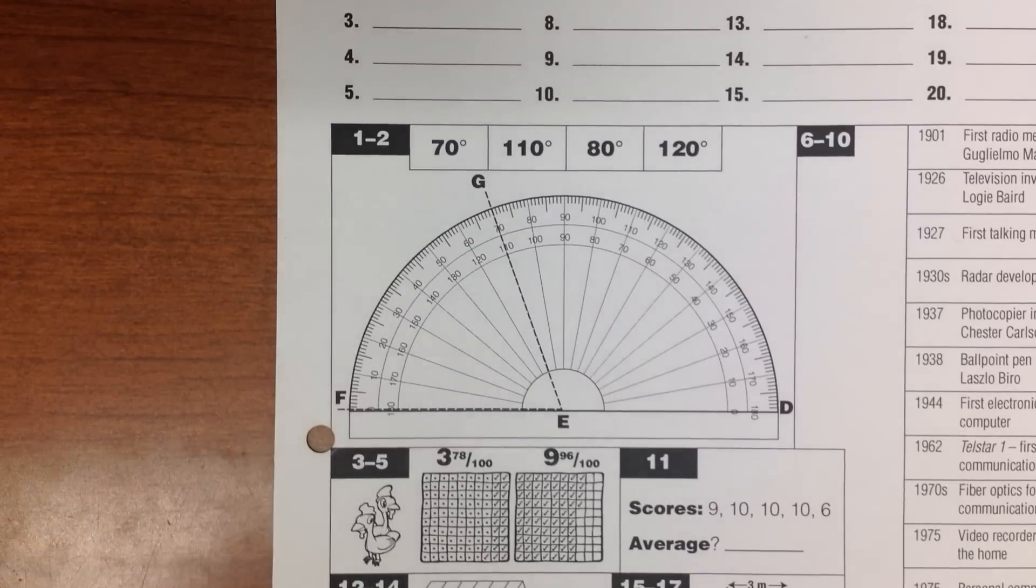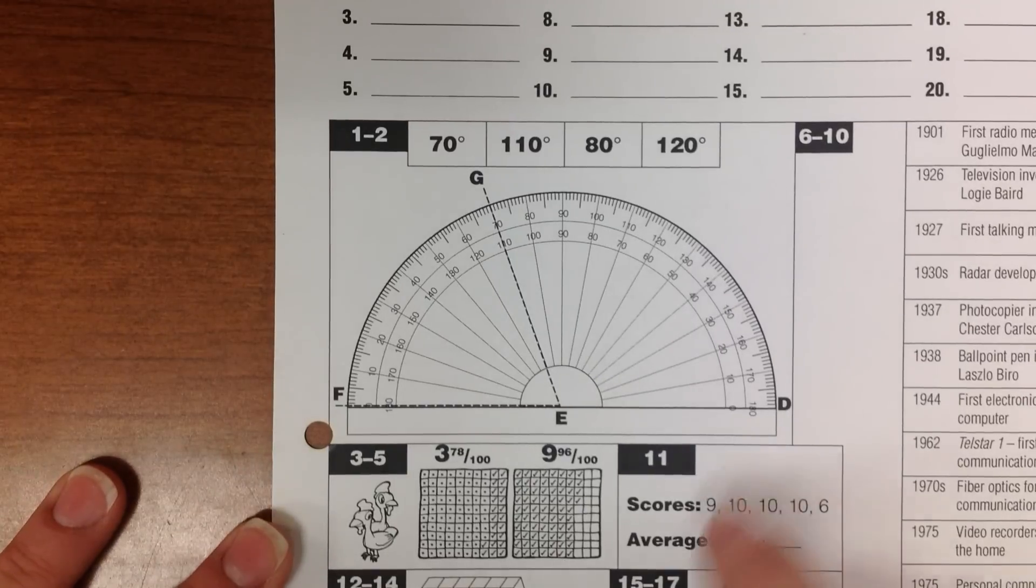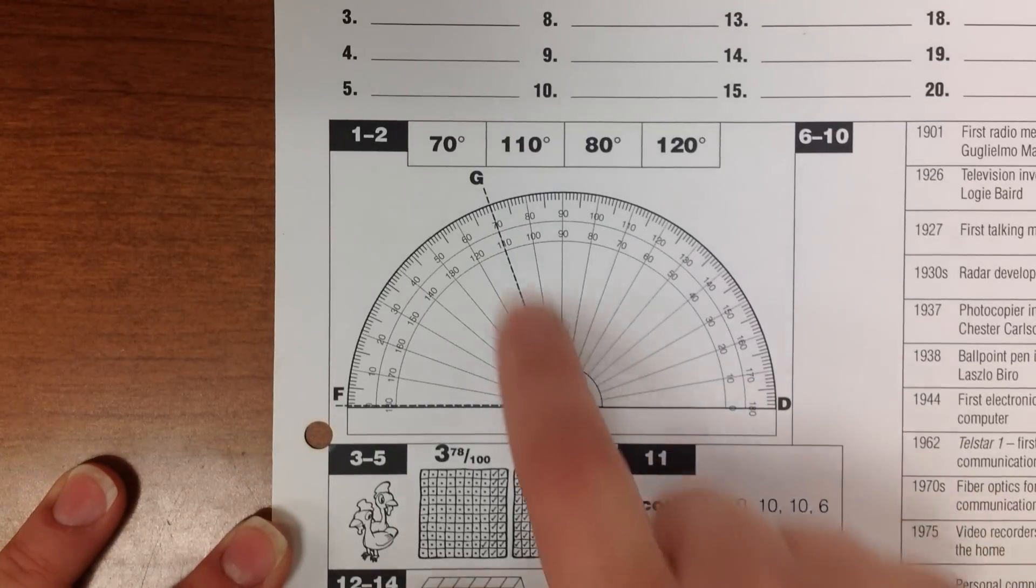Choose from the angle sizes on your sheet to write the size of angle D, E, G. D, E, G.